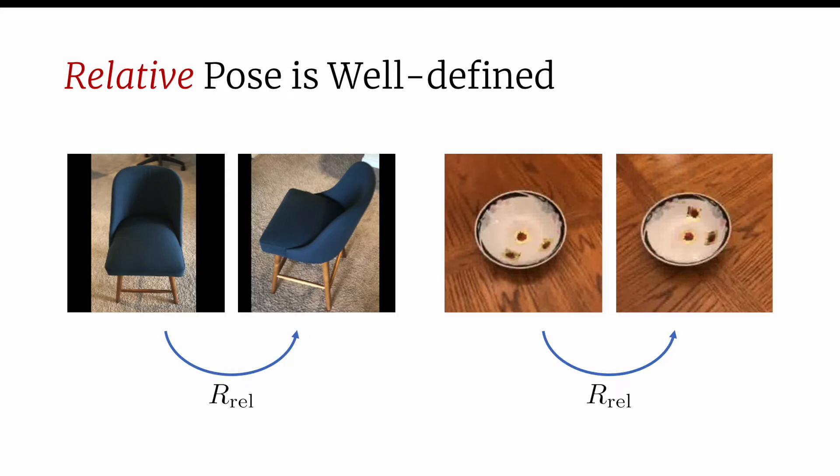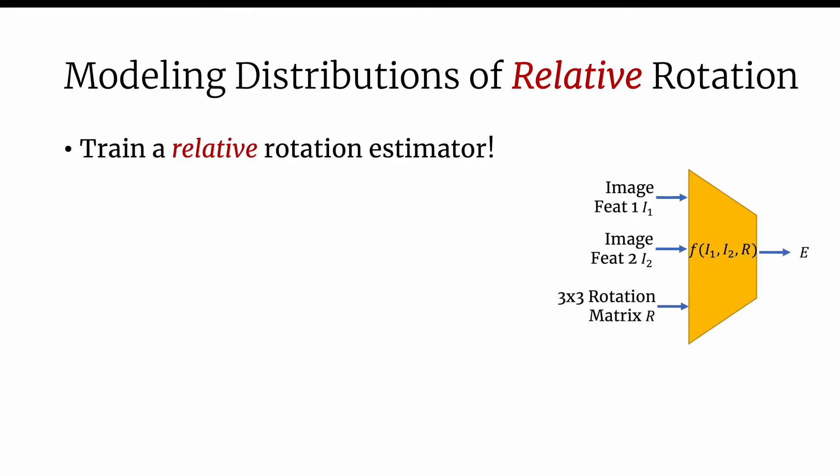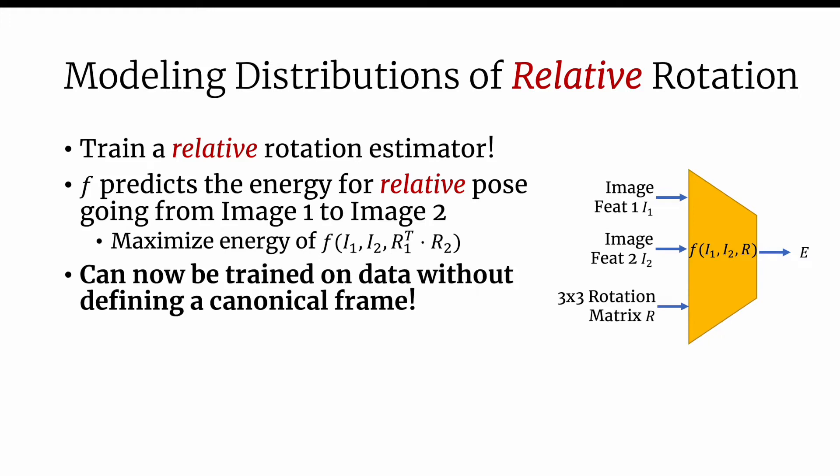Thus, we train a relative pose estimator f that predicts energy given two images and a query relative rotation. f predicts the energy for the relative rotation to go from the camera corresponding to image 1 to that of image 2. Importantly, this network can be trained without ever having to define a canonical coordinate frame.